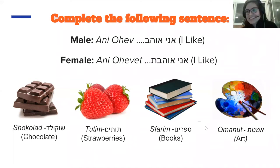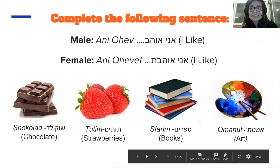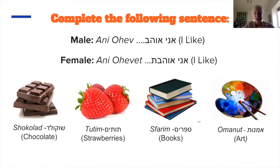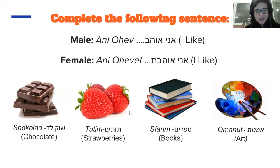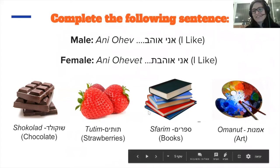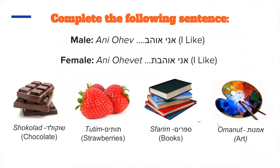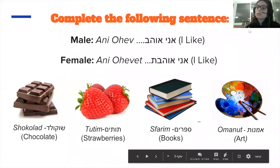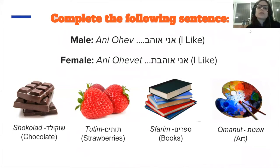Does anybody maybe want to try to sound that out — to say that he likes 'ani ohev' or 'ani ohevet'? 'Ani ohevet sfarim. Ani ohevet sfarim.' So you like chocolate and strawberries and books — 'ani ohevet, ani ohevet.' Fantastic! So we would kind of go around, ask each other what do you like, learn new nouns that we can say that we would like. That is what we would begin with.